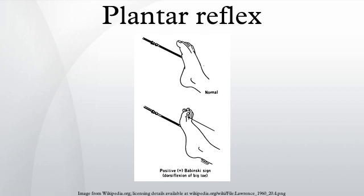In infants, an extensor response is also seen. A baby's smaller toes will fan out and their big toe will dorsiflex slowly. This happens because the corticospinal pathways that run from the brain down the spinal cord are not fully myelinated at this age, so the reflex is not inhibited by the cerebral cortex. The extensor response disappears and gives way to the flexor response around 12 to 24 months of age.